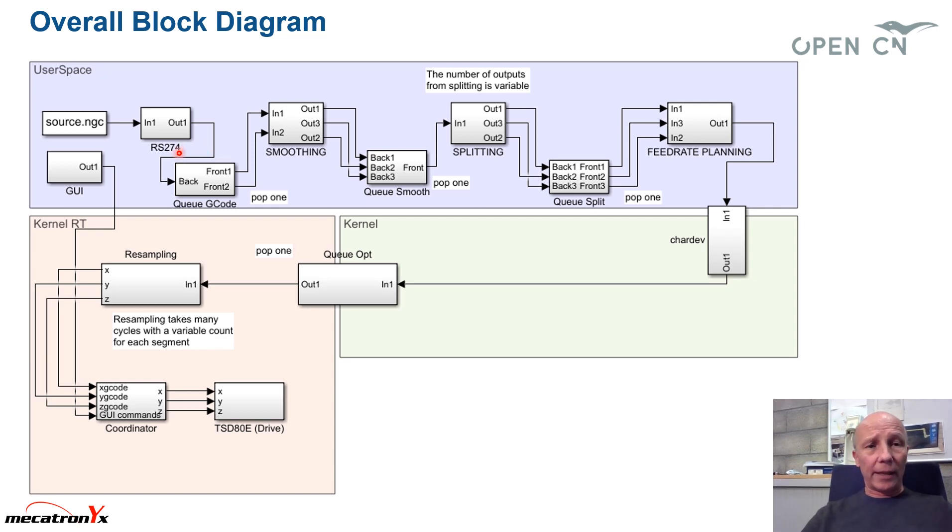These representations are going to a queue here. And the smoothing is taking out two curve pieces and cutting off both and inserting a curve completion. These curve completion together with the shortened paths here go again to a queue. And then we have what we call the splitting.